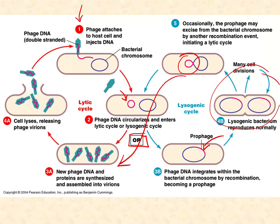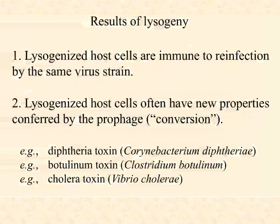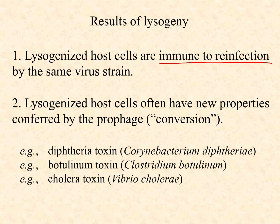Spend some time on this figure working through lytic and lysogenic cycles, and make sure you understand the difference between a lytic or virulent phage that only has a lytic cycle option versus a temperate or lysogenic phage that has both options. When a virus lysogenizes its host cell, the host cell is typically immune to being reinfected by the same or similar virus — it's almost like the virus changes the surface molecules at the attachment site, claiming that cell as its own. And because of transduction, horizontal gene transfer can take place as well.